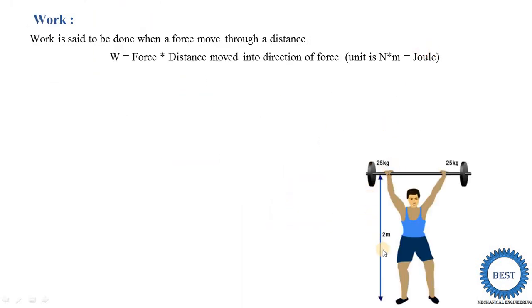Here you can see one person lifting a weight of 25 kg through a distance of 2 meters. To calculate the work done, we first need to calculate the force in Newtons: 25 into 9.8. Then work done equals 25 × 9.8 × 2. Suppose another person tries to lift the same 25 kg weight but cannot. The distance moved in the direction of force is zero, so work done is equal to zero.